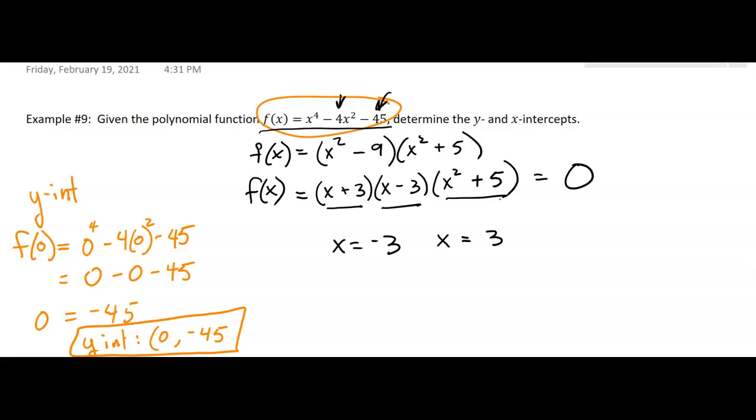Okay, so you can write x squared plus 5 equals 0. But think about it. You take any real number and square it, it's going to be a positive plus another positive. You're not going to get 0.